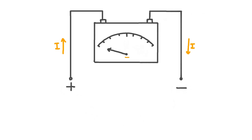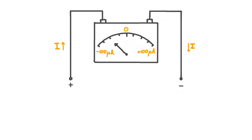But if we reduce the size of the potential difference, thus reducing the size of the current, then we see that the needle backs away from the end of the scale. We actually find that for small currents, the deflection of the galvanometer needle is proportional to the magnitude of the current. This means that a galvanometer can effectively measure the size of a current as long as that current is small enough. Typically, a galvanometer will reach full-scale deflection for a current in the microamp or milliamp region. So if this galvanometer reached full deflection for a current of 100 microamps, it would accurately measure currents smaller than 100 microamps.